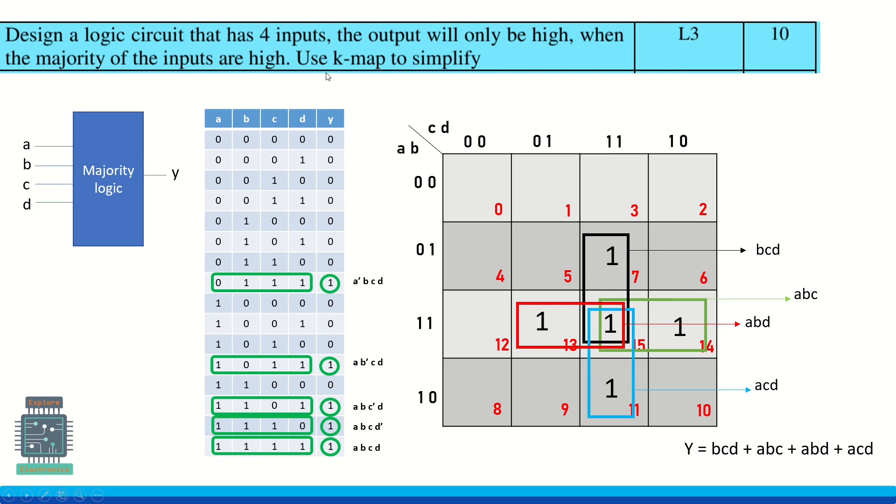And let us implement this using basic gates. Let us see how actually the circuit will be. Since we have the expression as sum of product expression, we require AND gates and OR gate to implement this expression.